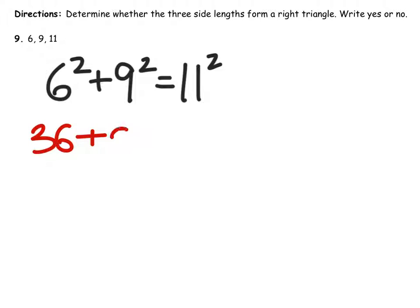So we got 36 plus 81 equals 121. And 36 plus 81 is 127 or 117? 117, yep.